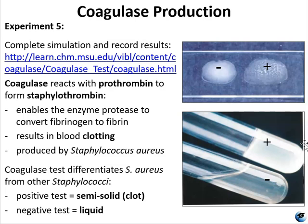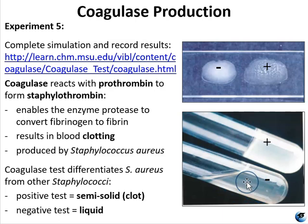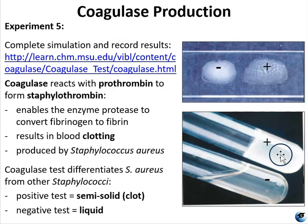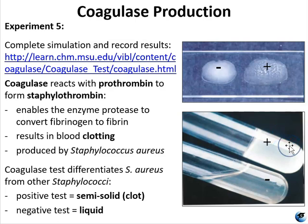A coagulase-positive test is a semi-solid clot, and a negative coagulase test is liquid. Because you use plasma for conducting a coagulase test, it starts out as liquid. If it stays liquid, then it's negative. But if after you inoculate the coagulase test tube and incubate it you have either all solids or clumps — little clots — or it's liquefied but with chunks in it, that's going to be positive for coagulase.